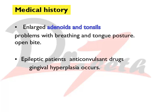In medical history, ask whether the patient is taking any drugs or has undergone any surgery. For example, if a patient had enlarged adenoids or tonsils during childhood causing breathing problems, the tongue posture will be altered — the tongue will be held forward and down — potentially leading to pseudo Class III and open bite. Ask whether they underwent surgery for adenoids or tonsils.